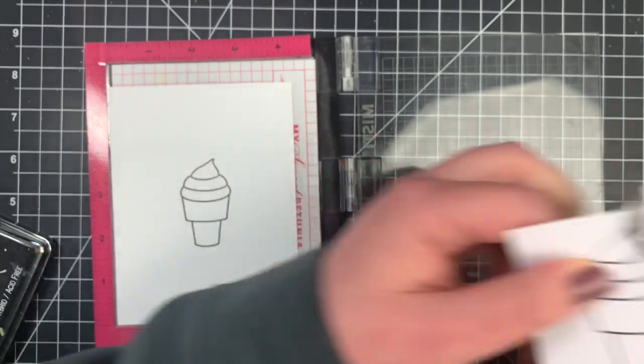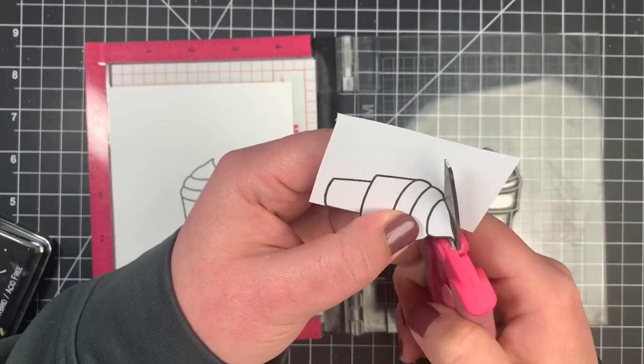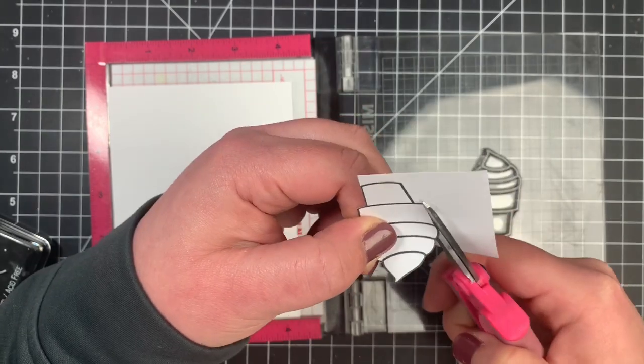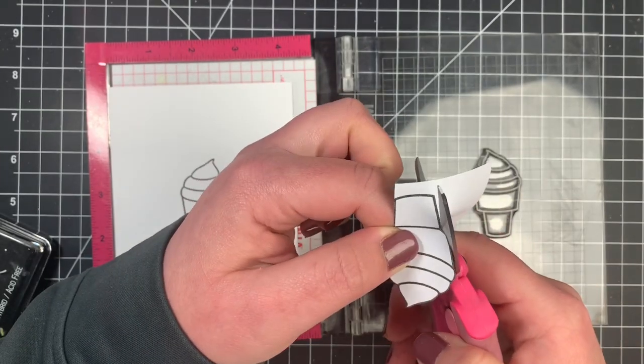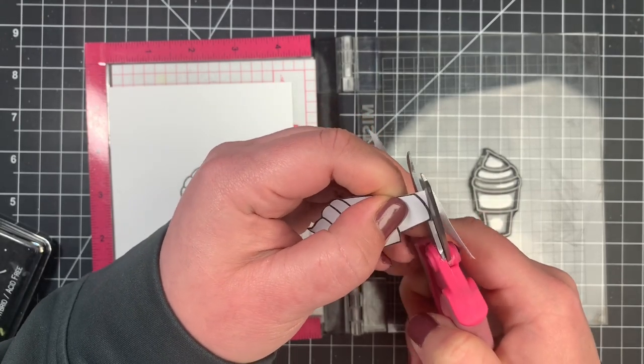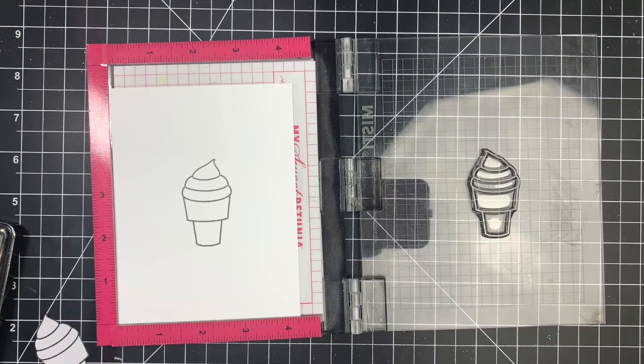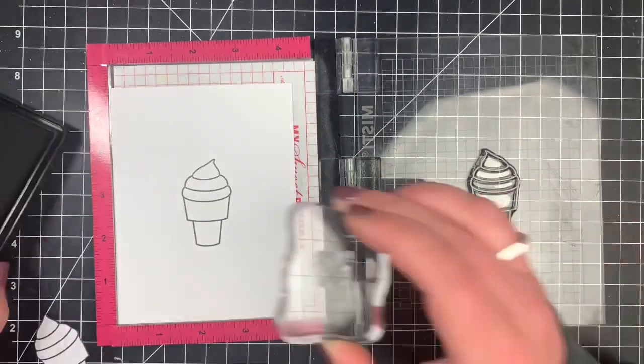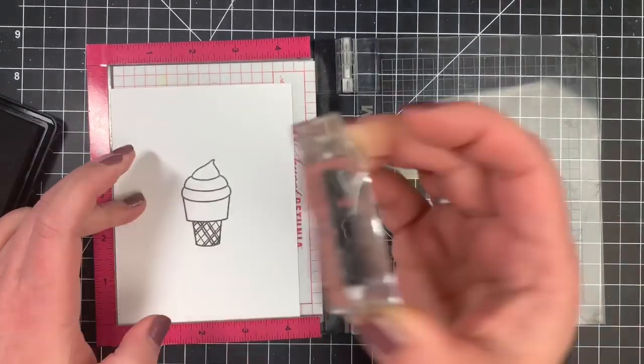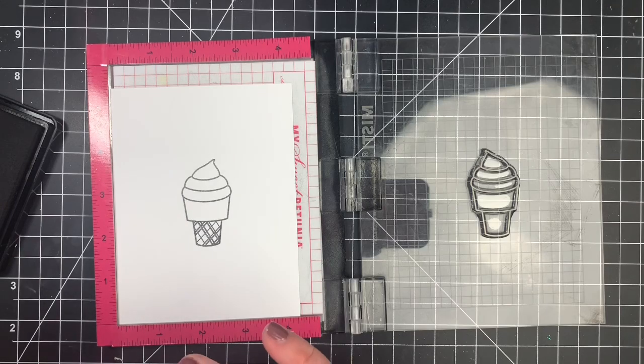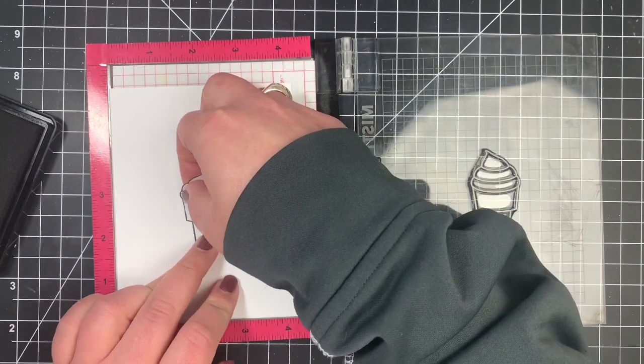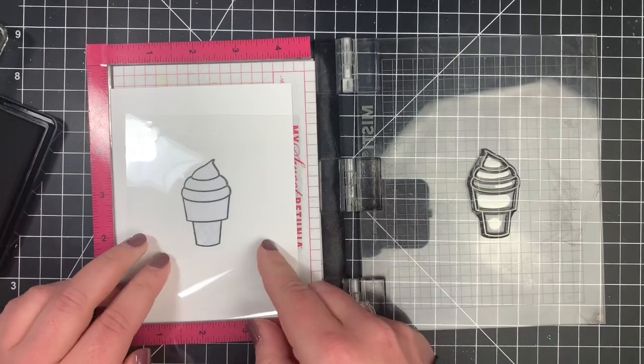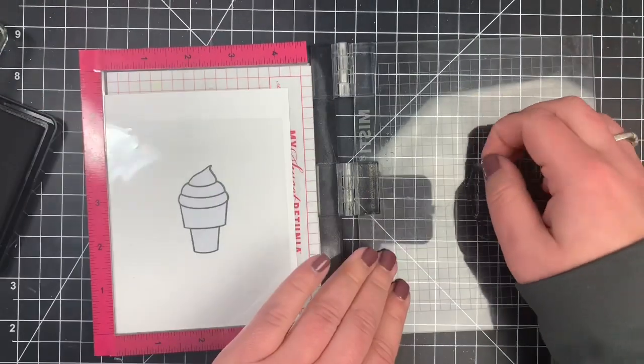I trim off any excess as I go along so it doesn't get in my way, and I keep my scissors somewhat straight and move the paper around with my less dominant hand. Before I stick that down, I'm going to stamp out this little additional stamp. It's like a layering stamp set that adds the lines in that ice cream cone, and it's extremely easy to line up. I'm not so good with layering stamps, but this one I had no problem at all.